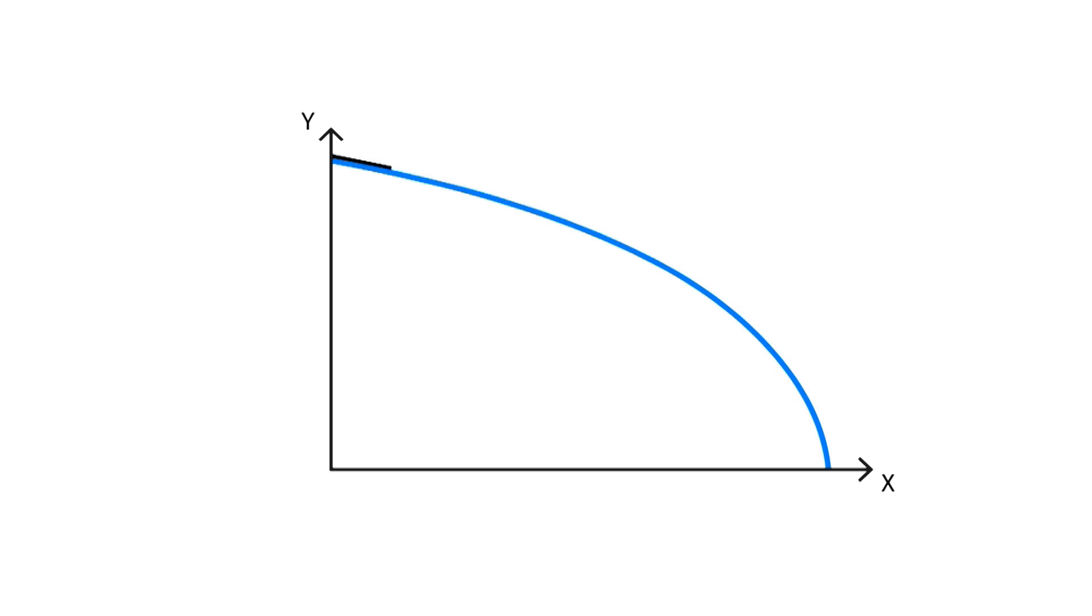This slope, which equals the marginal rate of transformation between x and y, shows us how, in order to increase the output x, the quantity of y must decrease.